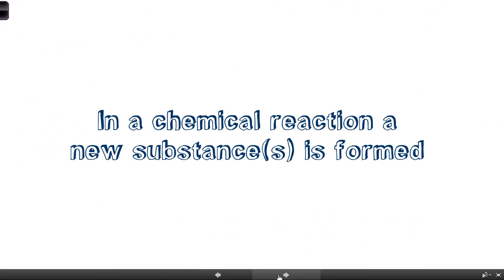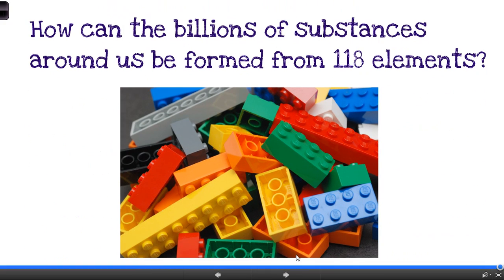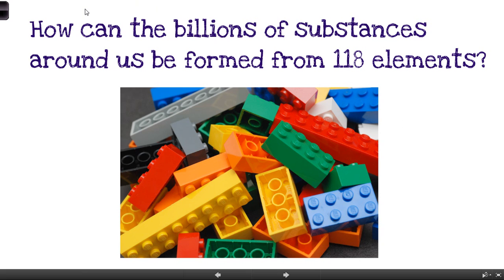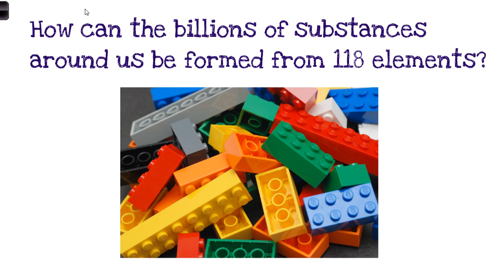So when we combine elements in different ways to make different compounds, those compounds are going to have very different properties from the elements they're made from. In a chemical reaction, a new substance or substances are formed. When elements combine it's a chemical reaction, and what we make is a totally new substance — sometimes even two new substances depending on the reaction. To recap: reactants on the left, arrow, then products on the right.